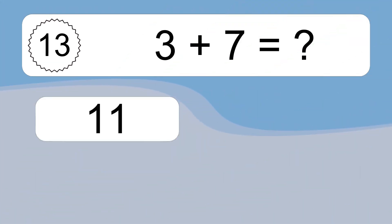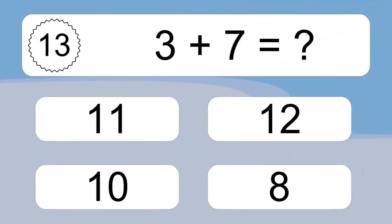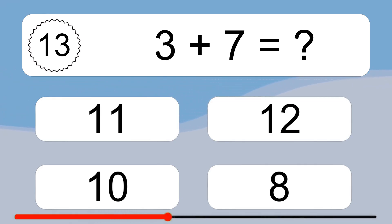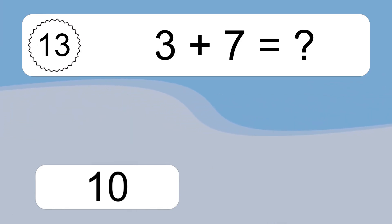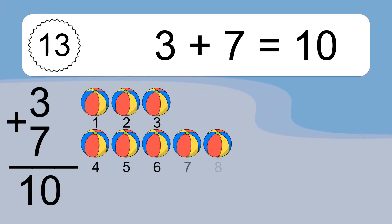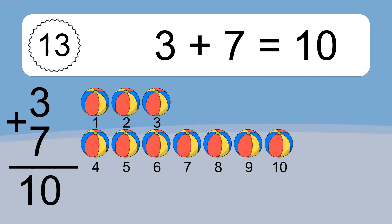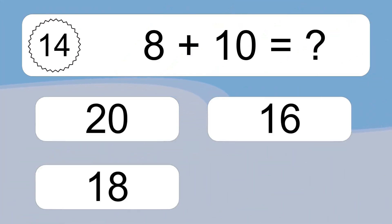3 plus 7 equals what? Let's count it: 1, 2, 3, 4, 5, 6, 7, 8, 9, 10.